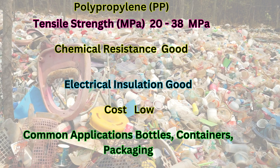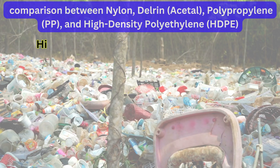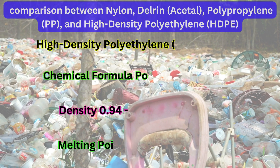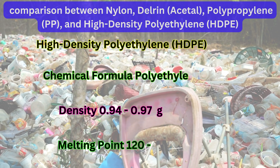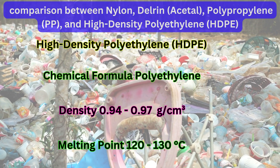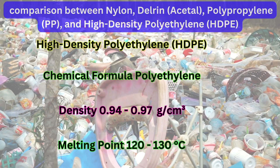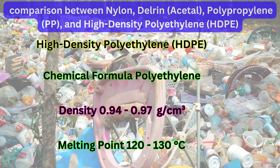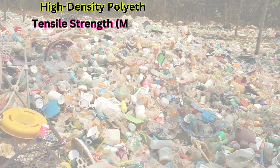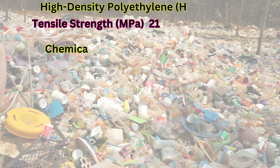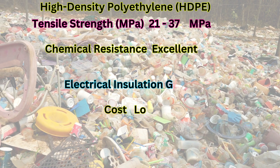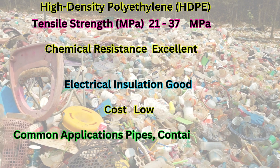High-density polyethylene (HDPE) — chemical formula: polyethylene; density: 0.94 to 0.97 g/cm³; melting point: 120 to 130°C; tensile strength: 21 to 37 MPa; chemical resistance: excellent; electrical insulation: good; cost: low; common applications: pipes, bottles, containers.